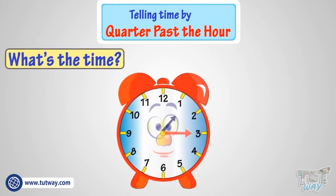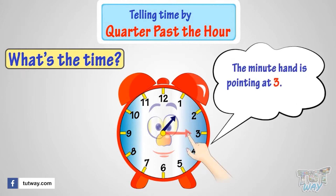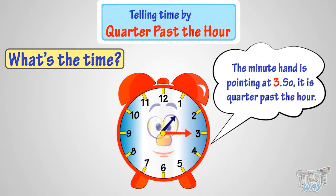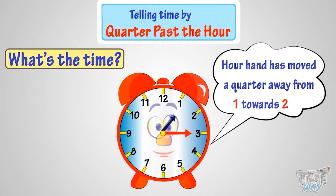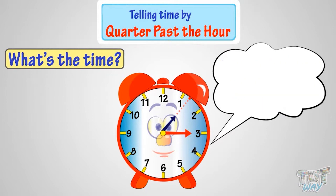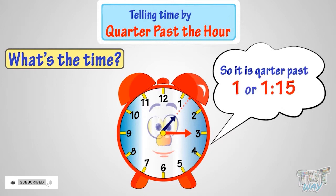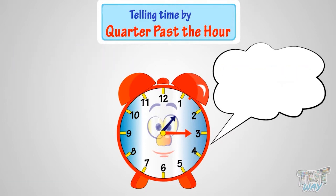Let's take another example. The minute hand is pointing at 3, so it's quarter past the hour. Quarter past which hour? The hour hand has moved a quarter away from 1 towards 2 — the dotted line points exactly a quarter away from 1 towards 2. So it is quarter past 1, or 1:15.